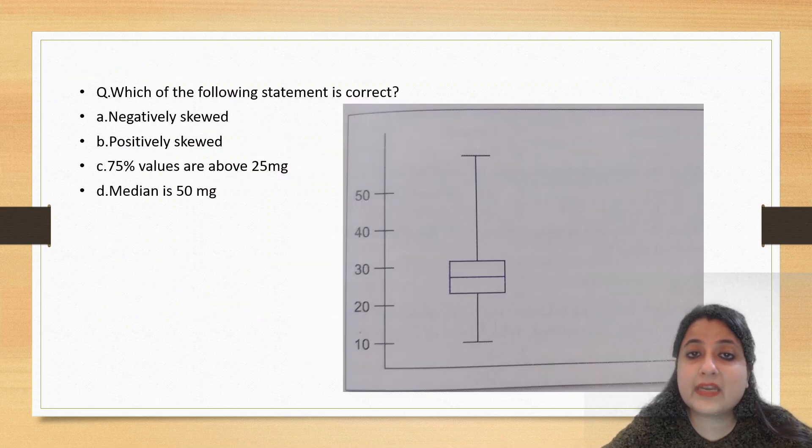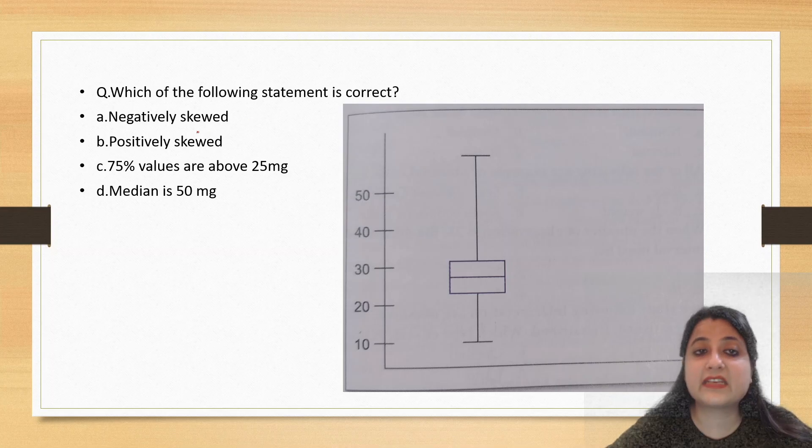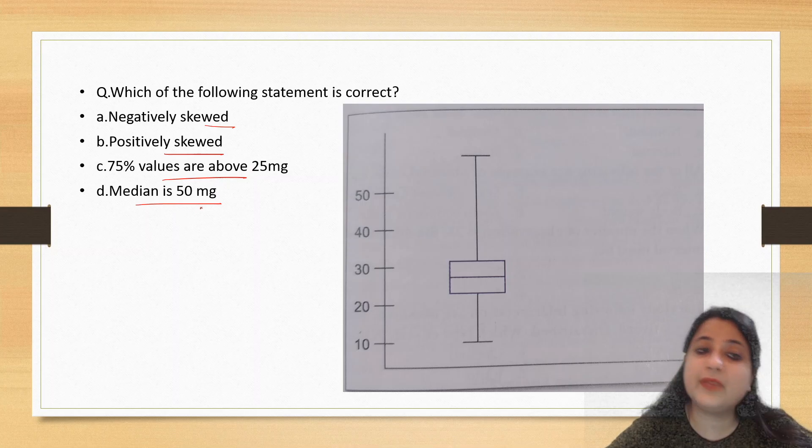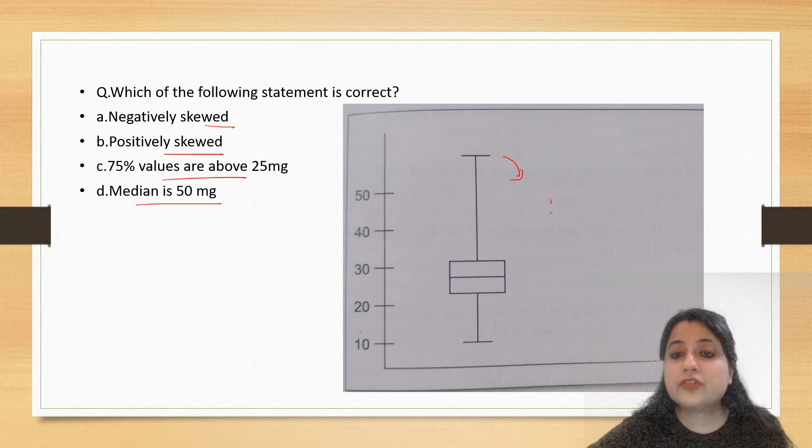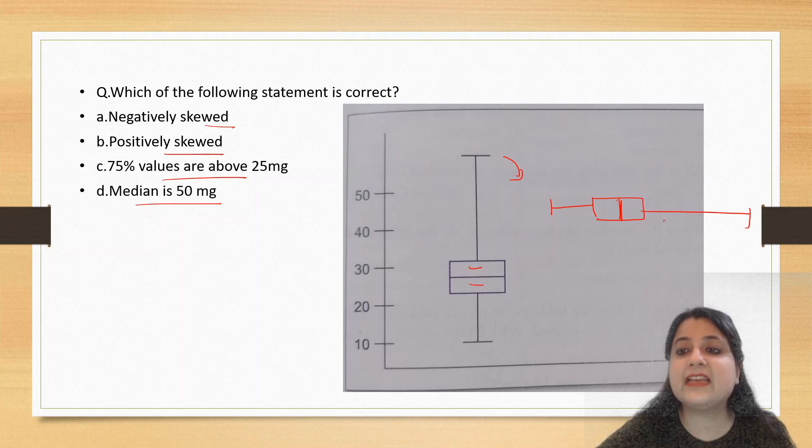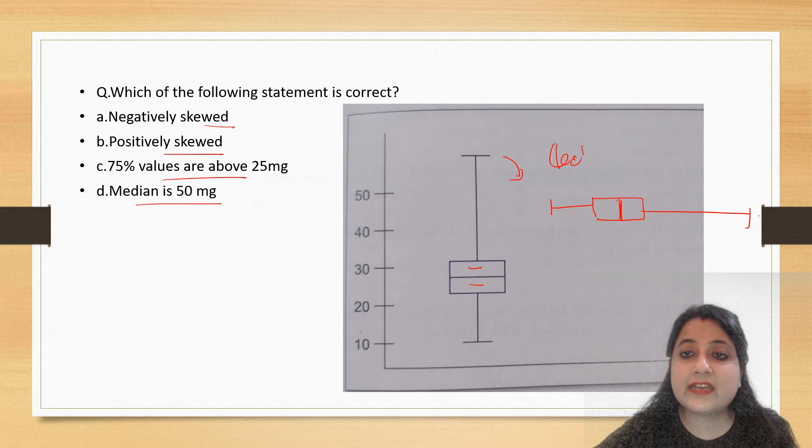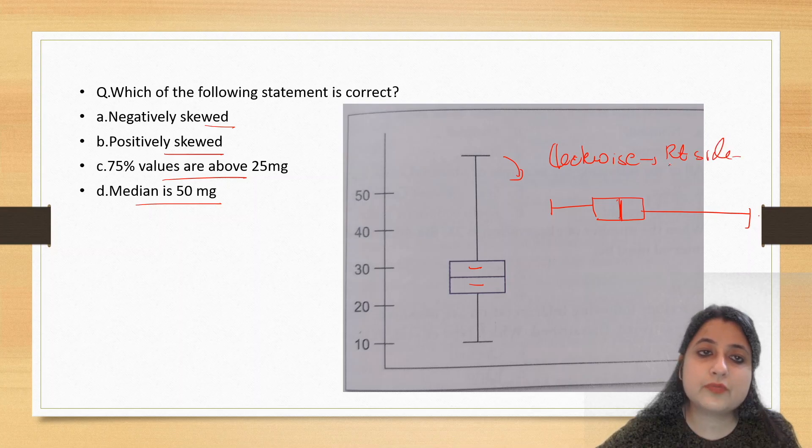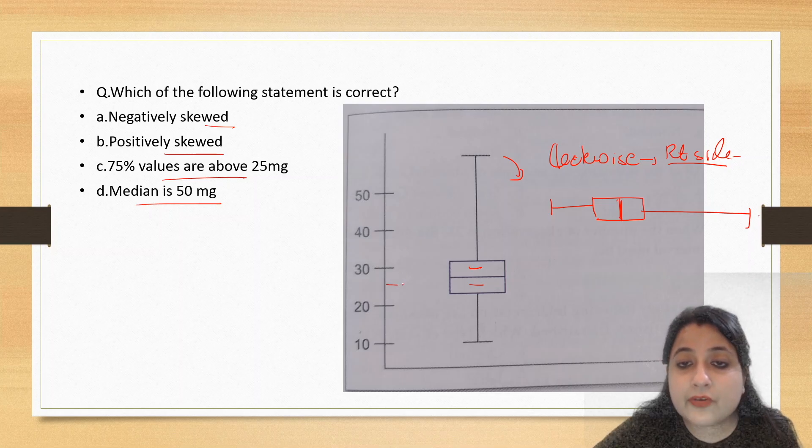Which of the following statement is correct? Negatively skewed, positively skewed, 75 percent values are above 25, median is 50. What do you think this is? What I have just taught you. Just try to rotate. If you rotate it, the middle is exactly equal, but which side is the tail elongated? On the right side. When you rotate it clockwise, the tail is elongated on the right side, so this becomes right sided skewness or positive skewness.